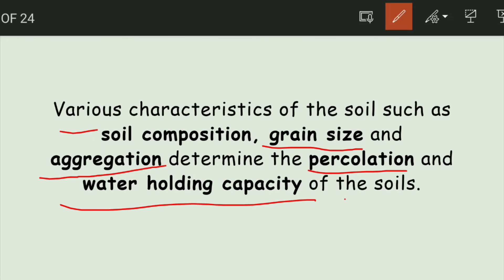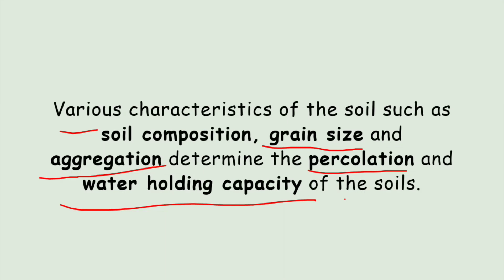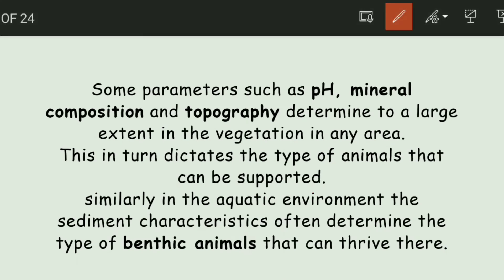Where water holding capacity and percolation are higher, that type of plants will grow. Other parameters like pH, mineral composition, and topography also determine what type of area, climate, and organisms will be there. In aquatic environments, the type of soil determines what benthic animals are present; on land, the type of soil determines what land animals are present. Soil thus depends on organisms' distribution and biodiversity.